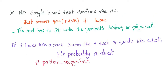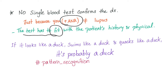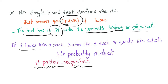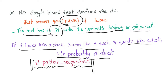Some key points for rheumatology: no single blood test whatsoever can confirm the diagnosis. Just because you have a positive ANA doesn't necessarily mean you have lupus — ANA can be positive in many conditions, including in normal people. The test has to fit with the patient's history and physical exam. Rheumatology is all about pattern recognition: if it looks like a duck, swims like a duck, quacks like a duck, it's probably a duck.